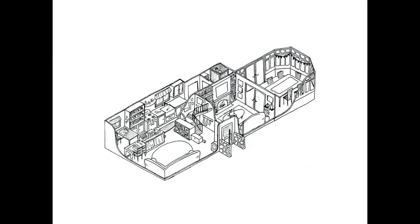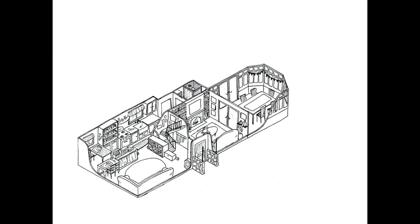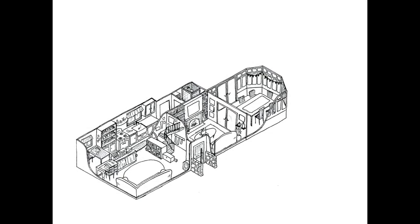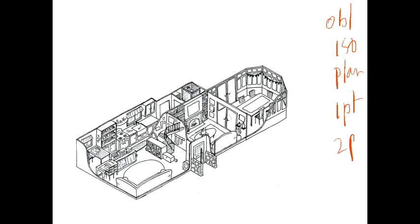So here's another drawing. I'm just going to move it around a little bit. So again, what sort of drawing is this? Remember: oblique, isometric, planimetric, one-point, and two-point. So what's the first thing that we're going to look for?